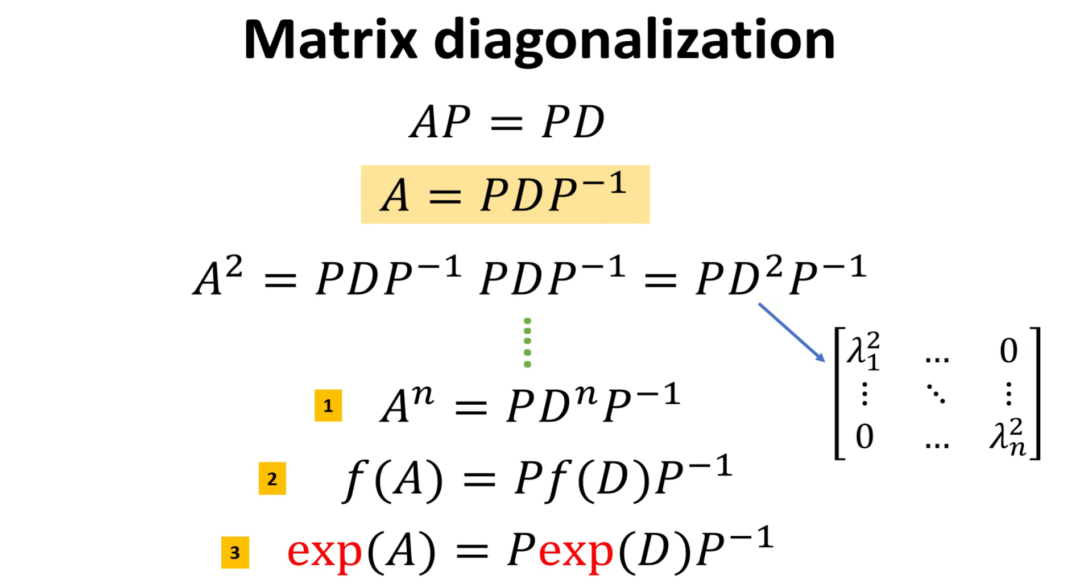Since D is a diagonal matrix, D squared will also be a diagonal matrix, but now with its eigenvalues being squared. We can easily extend this to higher powers of A, as shown in equation 1.